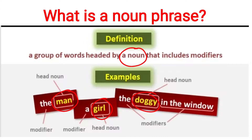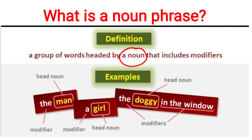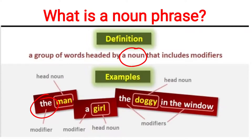girl, doggy — and other words like the, a, in the window play the role of modifiers. A modifier means any word which restricts or adds to the sense of a head noun. For modifiers we can use similar words like additional, attribute, or descriptive. So in the phrase 'the man', man is the head noun and 'the' is the modifier because it helps add more sense to the noun man.